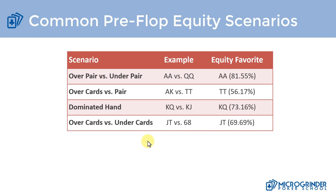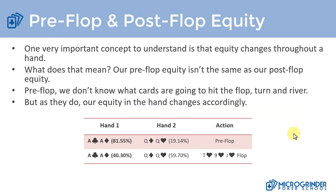Now I want to conclude by talking about pre-flop versus post-flop equity — they're not the exact same thing. Just because your hand was an 80 percent favorite pre-flop doesn't mean it'll be 80 percent by the river. The further we are from the river, the more equity is going to change; the closer we are to the river, the less it's going to change. For example, aces versus queens pre-flop: aces are almost an 82 percent equity favorite.